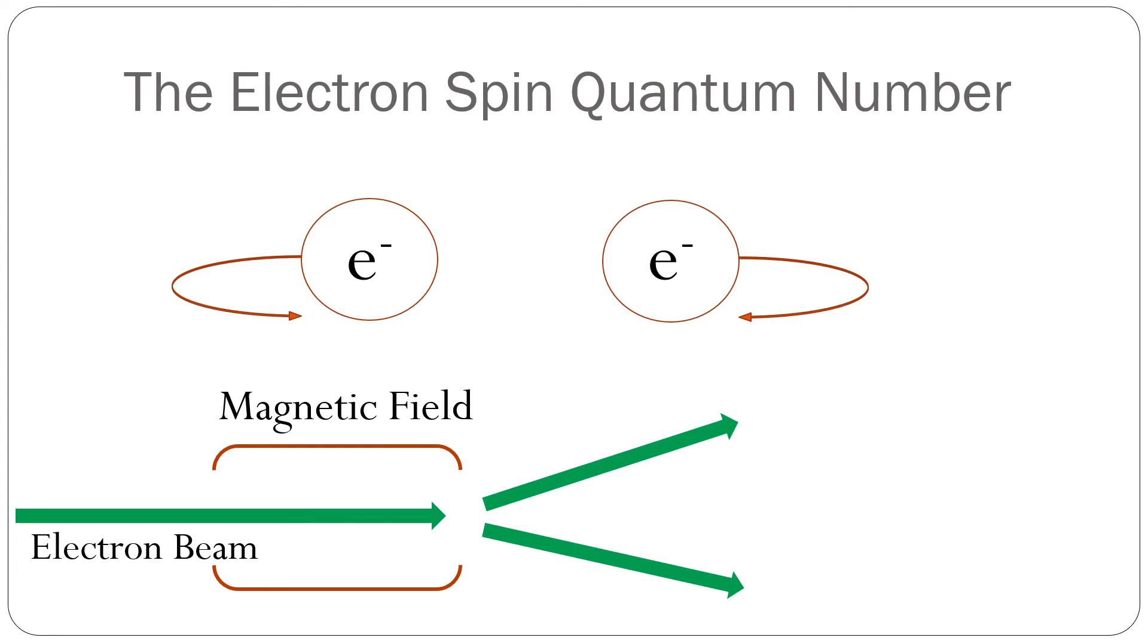The calculus shows that there are two possible answers for the electron spin quantum number, plus one-half and minus one-half.